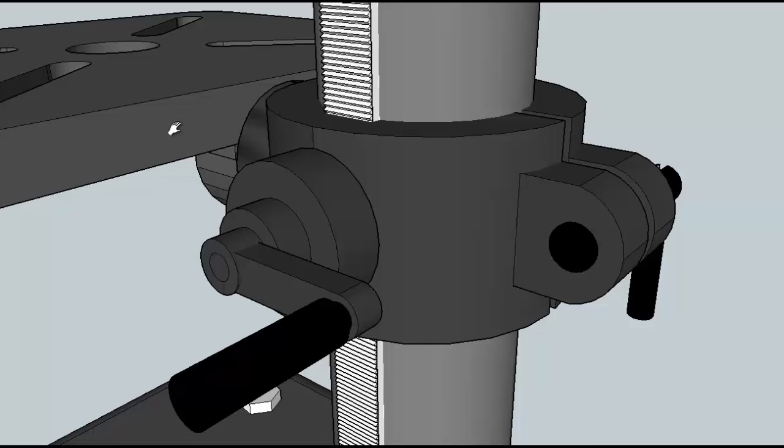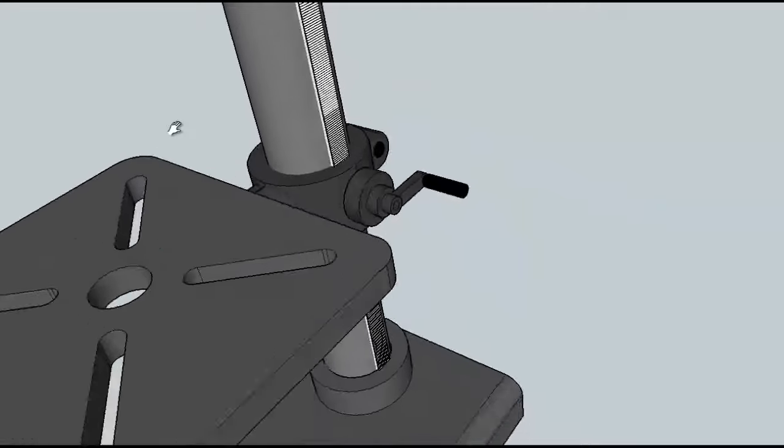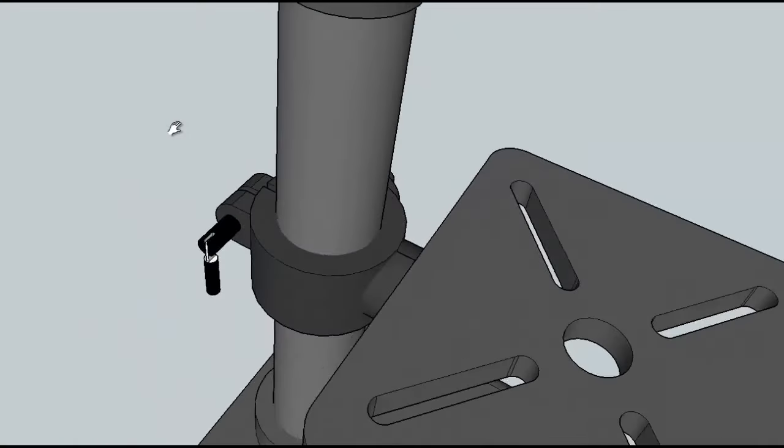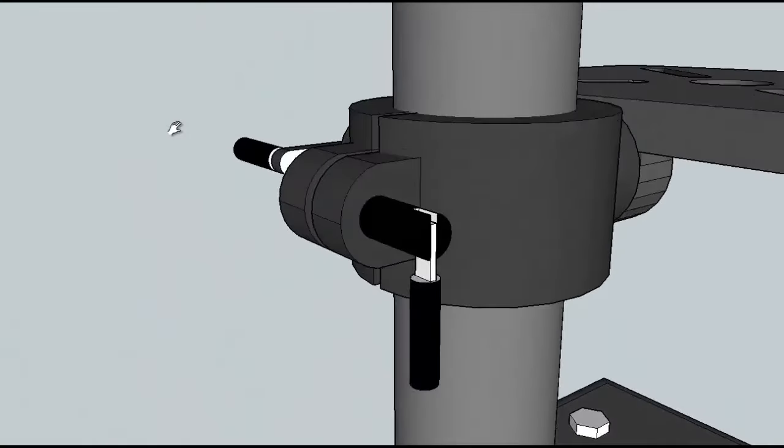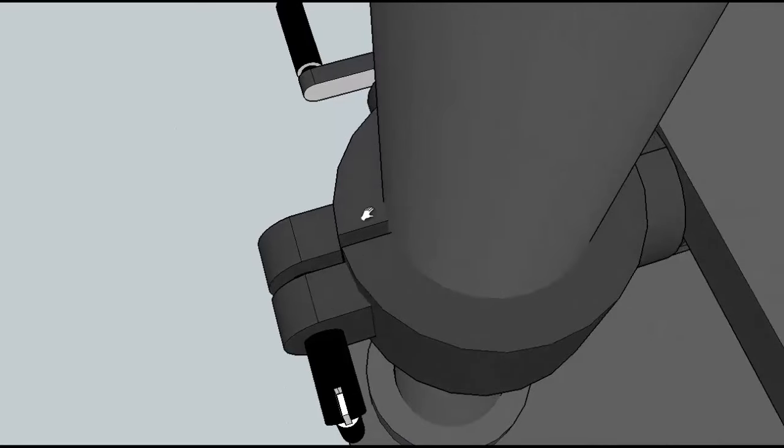But before they are able to do that they would need to unlock the table, which this mechanism is usually found on the other side of the drill press. This tightens up and squeezes this collar here, and when tightened it squeezes around the column so the table can't move. So it's always important to make sure that the table itself is locked down before you use the drill press.